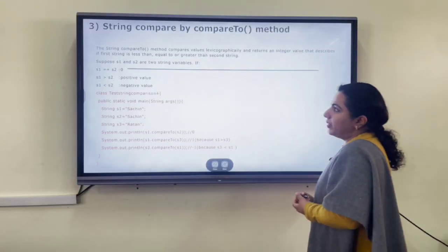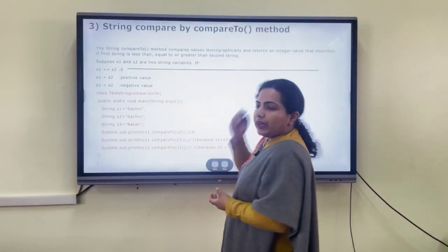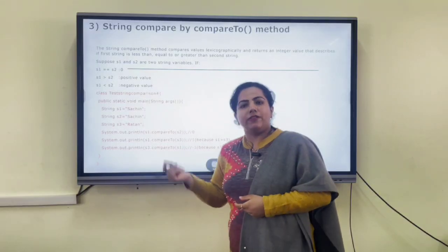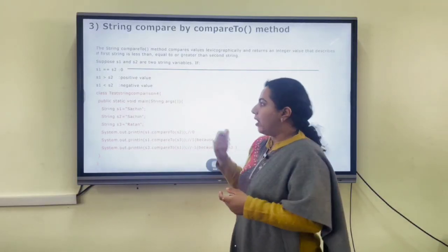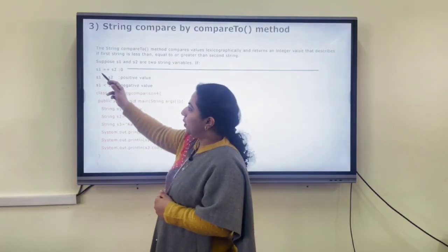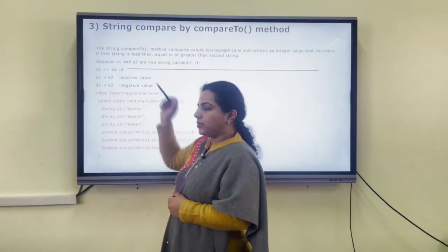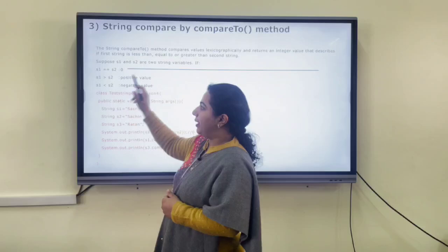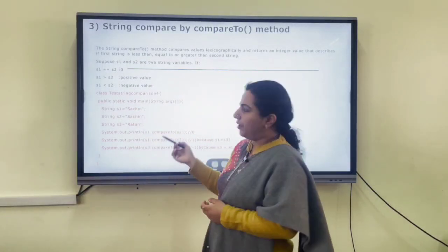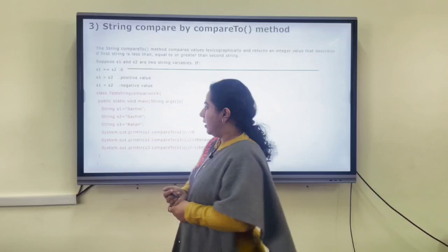Third is the compareTo() method. The compareTo() method works on a lexicographic technique, comparing values alphabetically to generate output. Three rules are followed: if s1 is equal to s2, it returns 0; if s1 is greater than s2, it returns a positive value; and if s1 is less than s2, it returns a negative value.